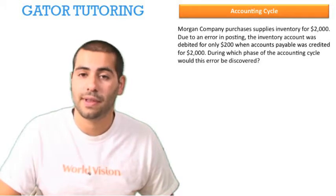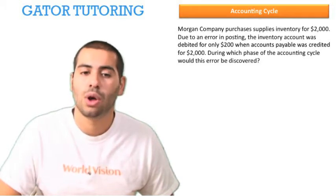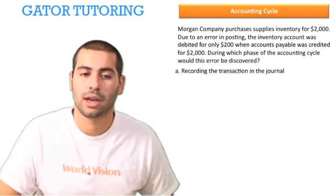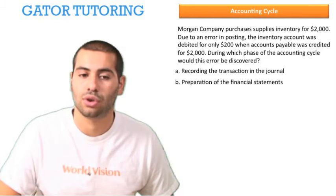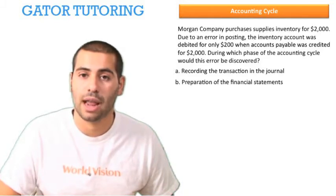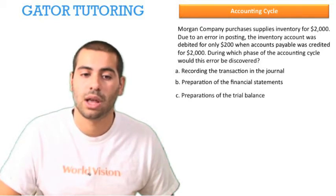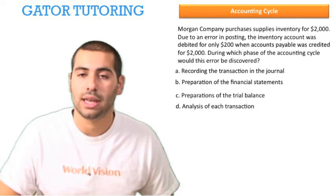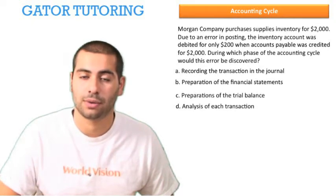During which phase of the accounting cycle would this error be discovered? Is it A. Recording the transaction in the journal, B. Preparation of the financial statements, C. Preparation of the trial balance, or D. The analysis of each transaction?